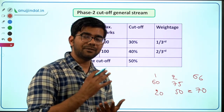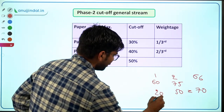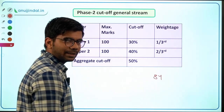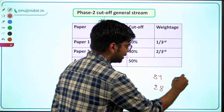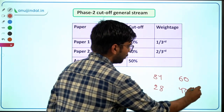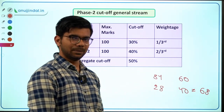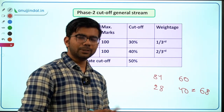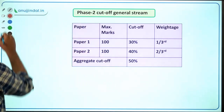This shows that if you score well in paper 1, even a slightly lower score in paper 2 can still get you through. For example, if you score 84 marks in paper 1: one-third of 84 is 28, and if paper 2 score gives 40, total becomes 68 — above the 66 cutoff. So paper 1 score is also very important; a good paper 1 can compensate for a weaker paper 2.